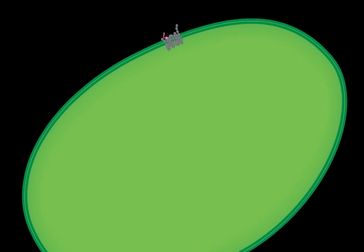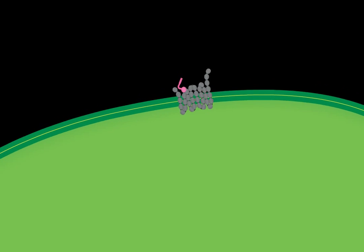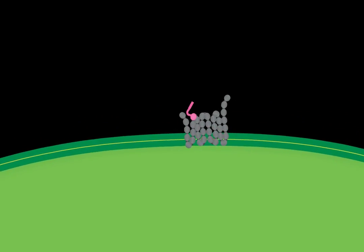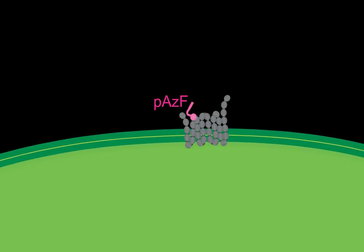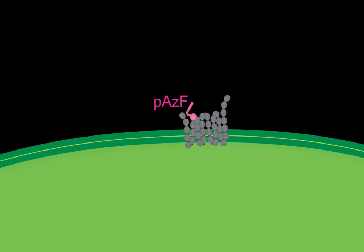After translation, the protein is transported to the outer membrane of the cell. The non-natural amino acid, PAZF, is now displayed on the outside of the bacterial membrane.